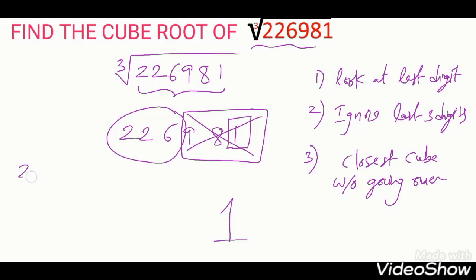The remaining digits we have 226. We have to take closer cube. We know 6 cube is 216. But 7 cube is 343. If you observe, 343 is more than 226. You should not take 7 cube. We have to take only 6 cube. 6 cube is the correct one. 6 we have to take.